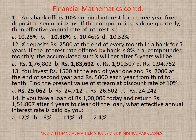Question 13: Rupees 1,500 at the end of year 1, rupees 2,000 at the end of the second year, and rupees 5,000 each year from the 3rd to the 10th year — find the present value of the stream at a discount rate of 10%. The correct option is A — rupees 25,062.